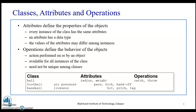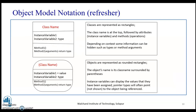An example: the class is Ball. The attributes are radius and weight, and the operations are catch and throw. Similarly, for Football, the attribute is air pressure, and the operations are pass, kick, and hand off. For Baseball, the attribute is liveliness, and the operations are hit, pitch, and tag.